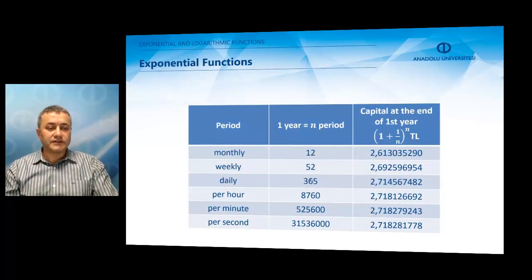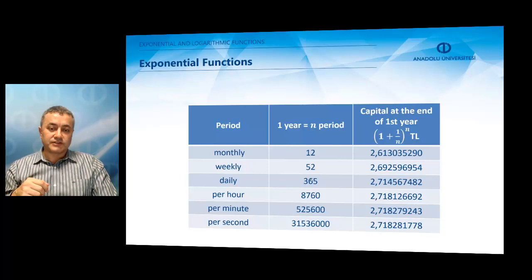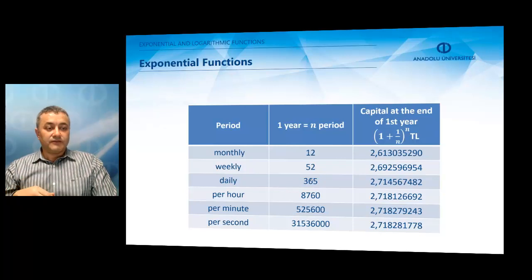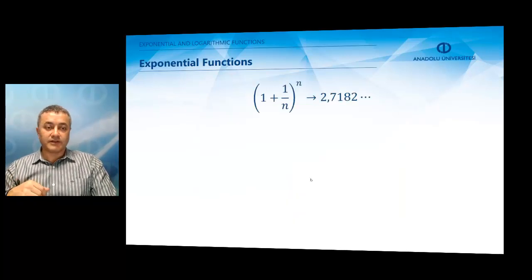Let's have a look at this table. If the period is a monthly period, then the money we are going to get at the end of one year is 2.61 lira. If it's a weekly period, we are going to get 2.69 lira. And if you go on like this, at the end of one year, if the period is taken as a second, the capital at the end of the first year will be 2.718281 and so on lira.